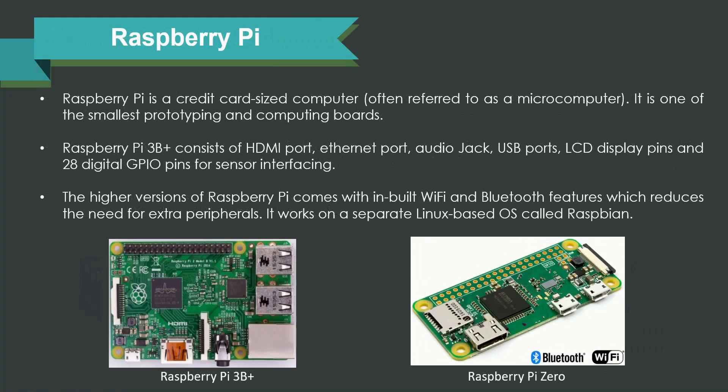The next one is Raspberry Pi. This microcontroller board is often called a credit card size computer and can also be considered a microcomputer. It is one of the smallest prototyping and computing boards available in the market — a true revolution. Raspberry Pi 3B Plus consists of an HDMI port, Ethernet port, audio jack, USB ports, LCD display pins, and 28 digital GPIO pins for sensor interfacing. Higher versions come with inbuilt Wi-Fi and Bluetooth. It runs on a Linux-based operating system called Raspbian.